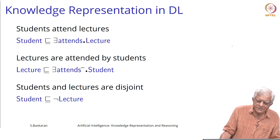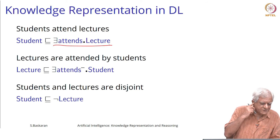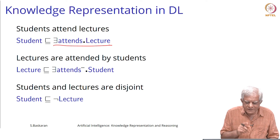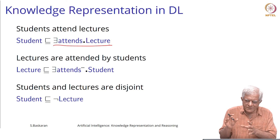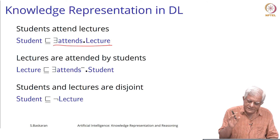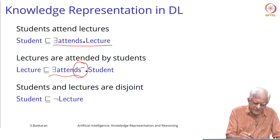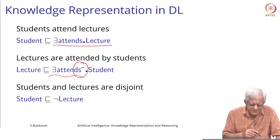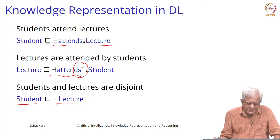If you want to say 'students attend lectures', the right-hand side says the set of individuals who attend at least one lecture, and students are basically those people who attend at least one lecture. Lectures are those things which are attended by students — it is the inverse of the attend role essentially — and that lectures and students are disjoint can be said using this relation.